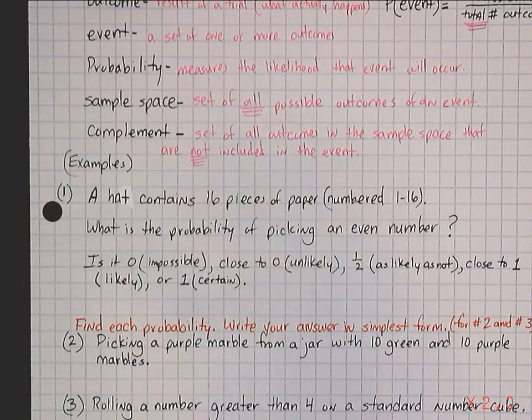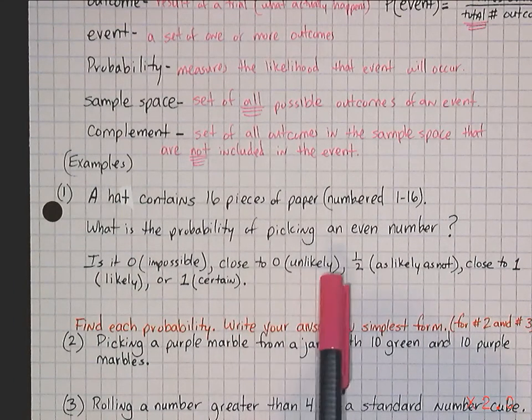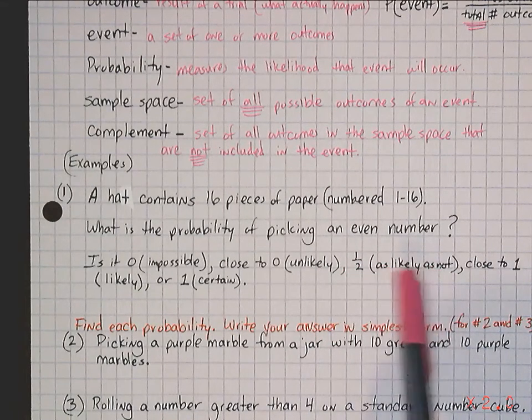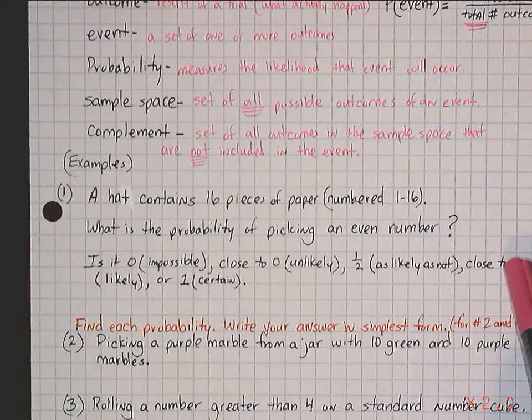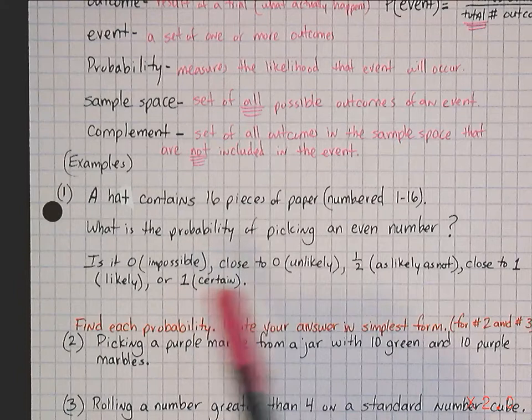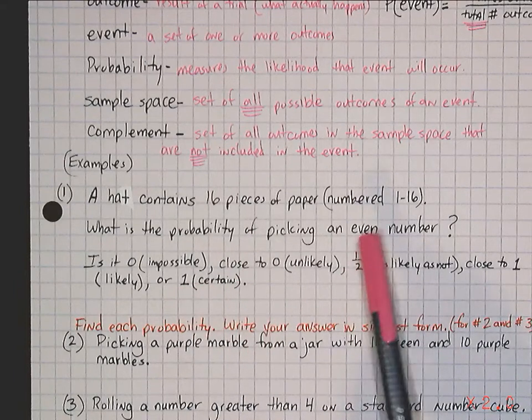Is it zero, impossible? Is it close to zero, which is unlikely? Is it one half, as likely as not? That's the English terminology there. Is it close to one, which would we say likely? Or is it one, certain? So, let's talk about it.